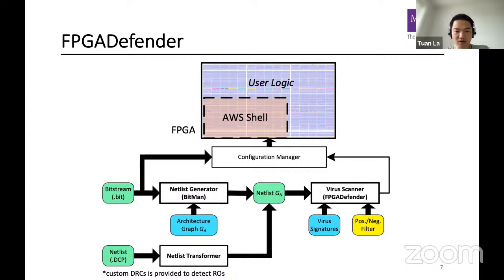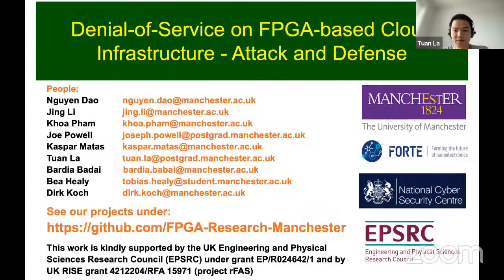For countermeasures, our FPGA defender generates a netlist from both the bitstream and the design, checks for malicious designs — for example ring oscillators and placement violations — and it's up to the configuration manager to decide if the design is safe to load. Additionally, we have a custom DRC to detect ring oscillators. That brings me to the end of my presentation — feel free to ask questions or contact us afterward.